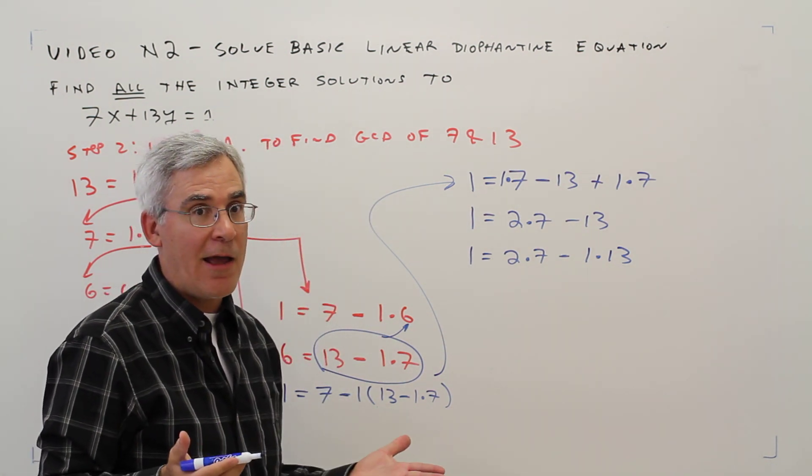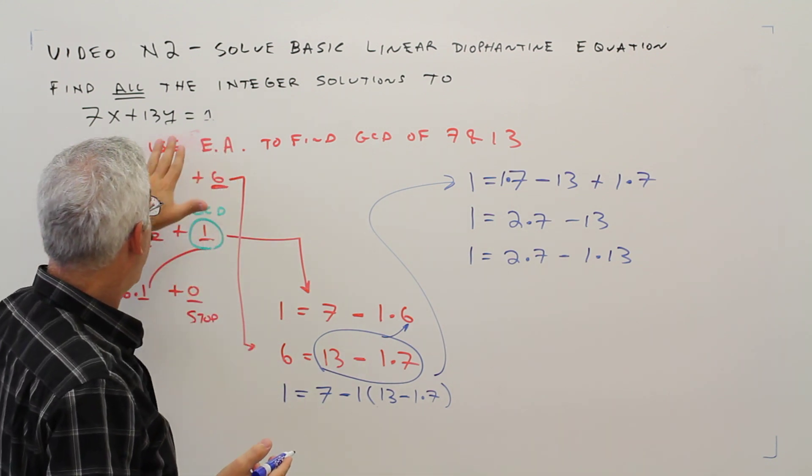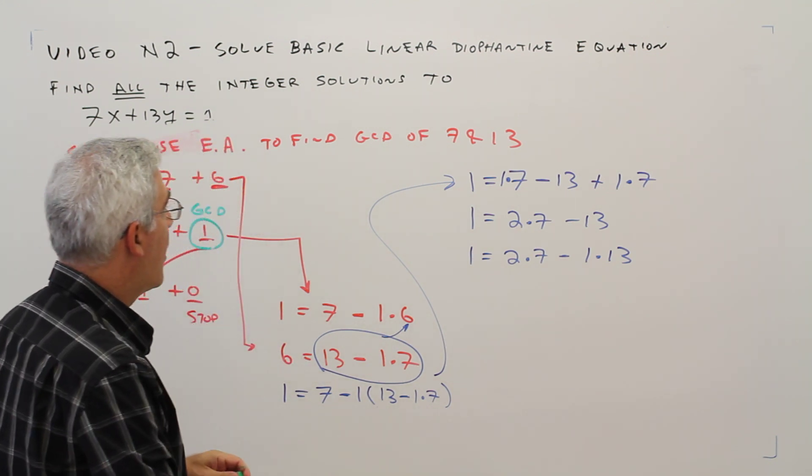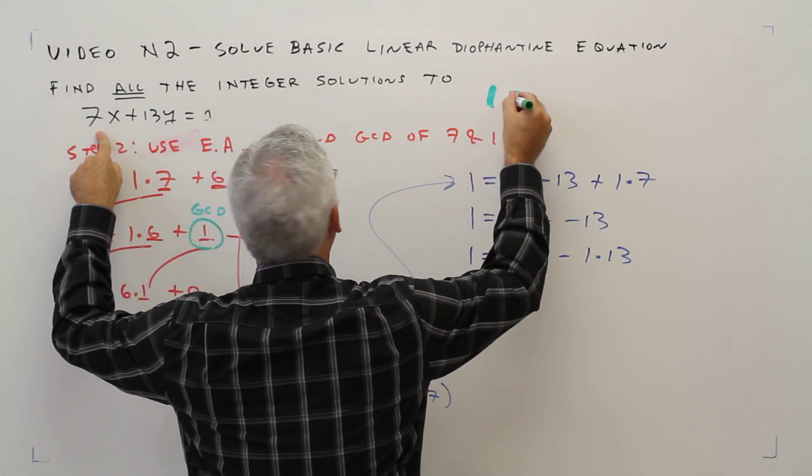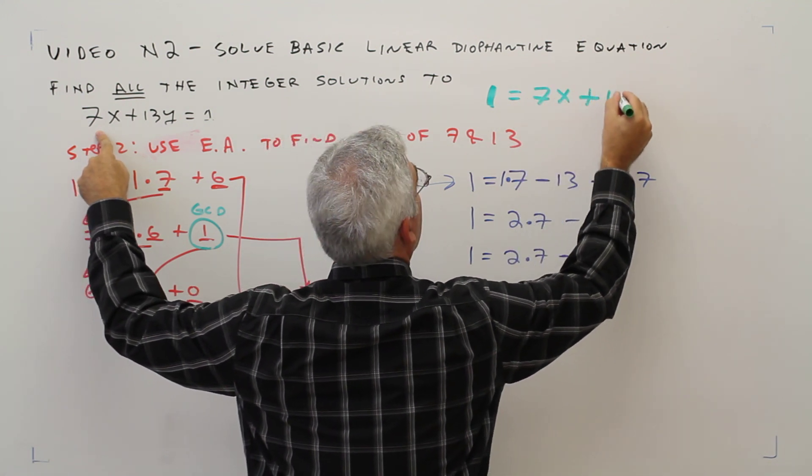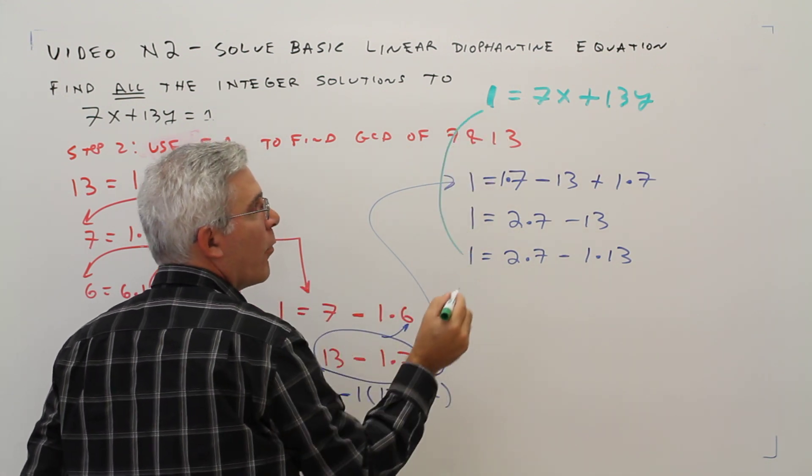And you may not realize this, but you're kind of done. Look at our original problem. I'll write that in green. Our original problem was 1 equals 7x plus 13y. Look what I've got going on. I've got the 1s, I've got the 7s.